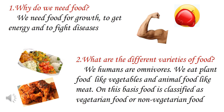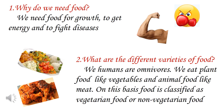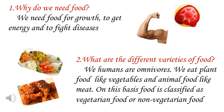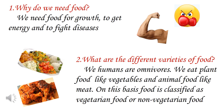What are the different varieties of food? We humans are omnivores. We eat plant food like vegetables and animal food like meat. On this basis, food is classified as vegetarian food or non-vegetarian food.